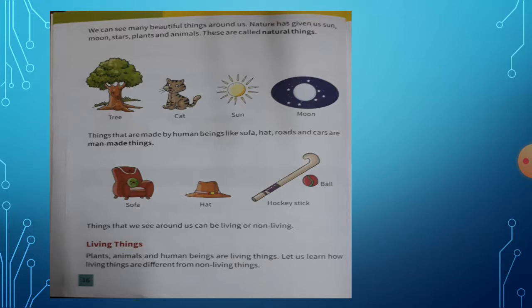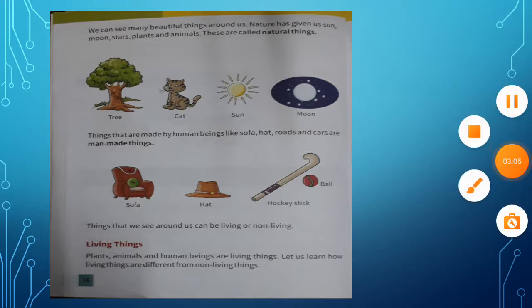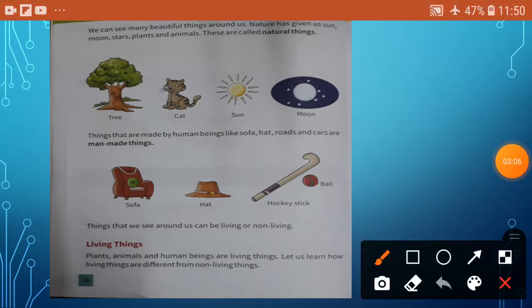Nature has given us sun, moon, stars, plants, and animals. These are called natural things. Tree is natural, cat is natural, sun and moon also — not man-made things. So, natural things.